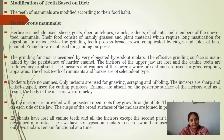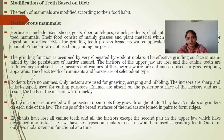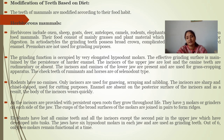In rodents, only incisors are used for gnawing, scraping, and nibbling. Incisors are sharp and chisel-shaped, used for cutting. Enamel is absent on the posterior surface of incisors; as a result, the body of the incisor wears quickly. Incisors are provided with persistent open roots throughout life — rodents are called open-rooted incisor animals, which continuously grow. They are known as gnawing animals. They have three molars or grinders on each side of the jaw.